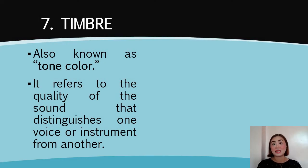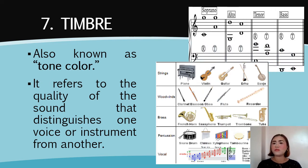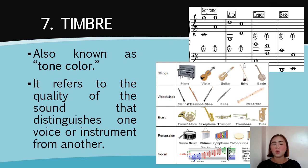The next element is timbre. Now, there are two variations of timbre — one for musical instruments and the second one is for the voices. Timbre is also known as tone color. It refers to the quality of the sound that distinguishes one voice or one instrument from another.